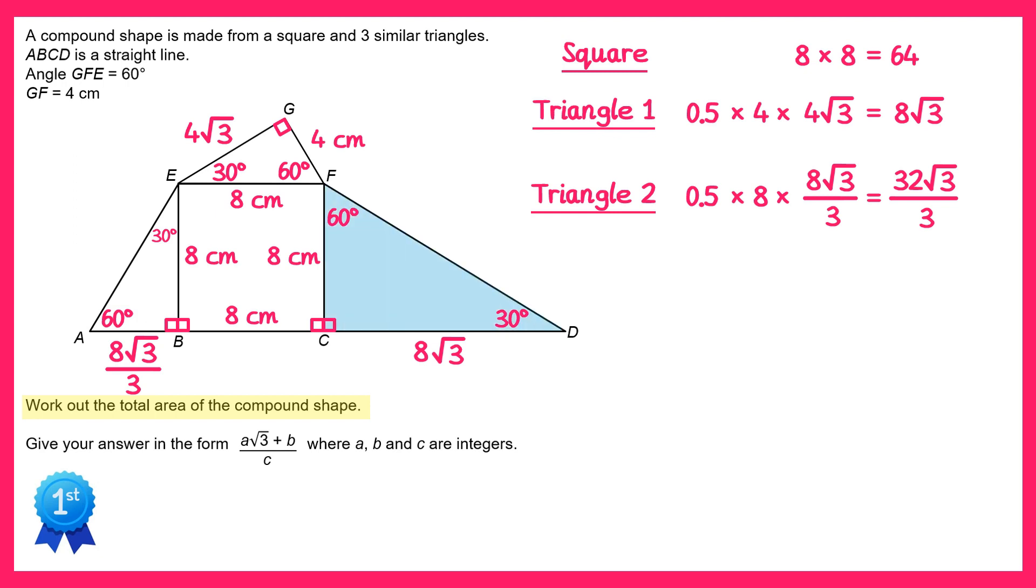And finally on to the last triangle, we've got one half times the base, which is 8, times the height, which is 8 root 3. And this gives you 32 root 3.